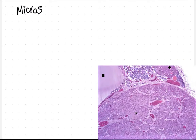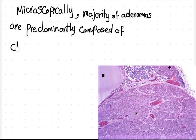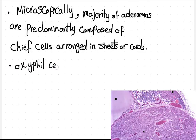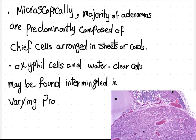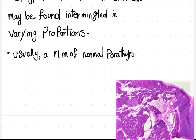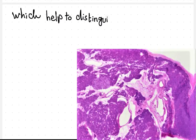Microscopically, the majority of adenomas are predominantly composed of chief cells arranged in sheets or cords. Oxyphil cells and water-clear cells may be found intermingled in varying proportions. Usually, a rim of normal parathyroid parenchyma and fat are present external to the capsule, which helps to distinguish an adenoma from diffuse hyperplasia.